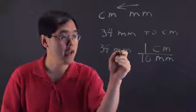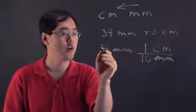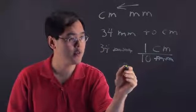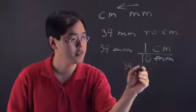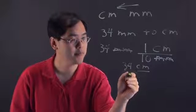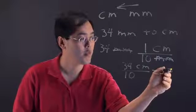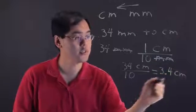Basically, what you have here is millimeters will cancel. So, multiplying across, you have 34 times 1. You have 34 centimeters and the denominator stays put as 10. So, 34 divided by 10 is going to be 3.4 centimeters.